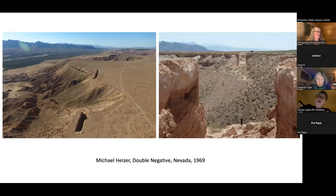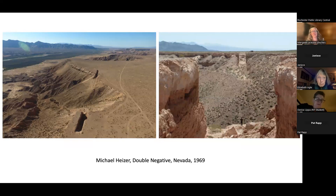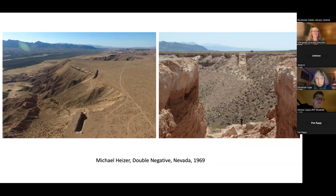This is Michael Heizer's Double Negative. It consists of two massive trenches cut into a mesa in the Nevada desert, and it carries with it a sense of implicit violence — violence in nature. As Heizer himself describes it: 'Double Negative is really a scar of a kind, an intrusion of nature, an assault of some sort. It's as though a surgeon took an exploratory cut of a mesa to show its innards.'